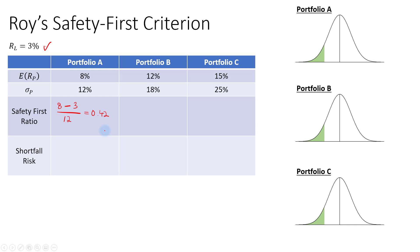The SFR is rounded to two decimal places to match the statistical table, which only shows two decimal places. For Portfolio B, the SFR is 12% minus 3% over 18%, giving 0.5. For Portfolio C, it is 15% minus 3% over 25%, giving approximately 0.48.